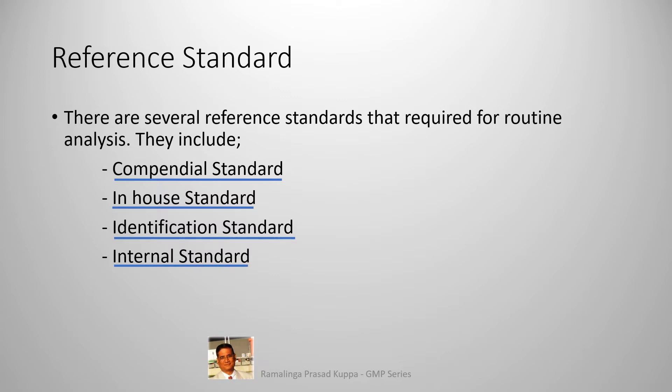Internal standard is typically used to avoid variations in area counts that are possible for certain analytical techniques. This is also for typical GC analysis where higher temperatures are used for the injector port. Because of the high temperature, there is a potential for evaporation of the sample during injection. When internal standard is used in analysis, the ratio of the compound of interest and the internal standard is considered to avoid errors and get consistent area ratios.